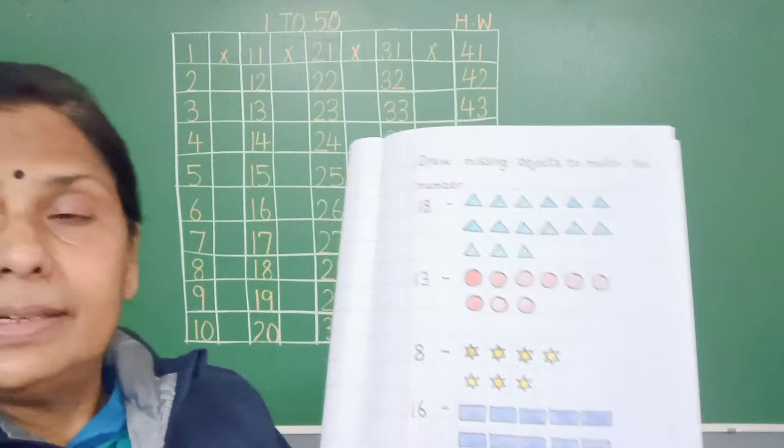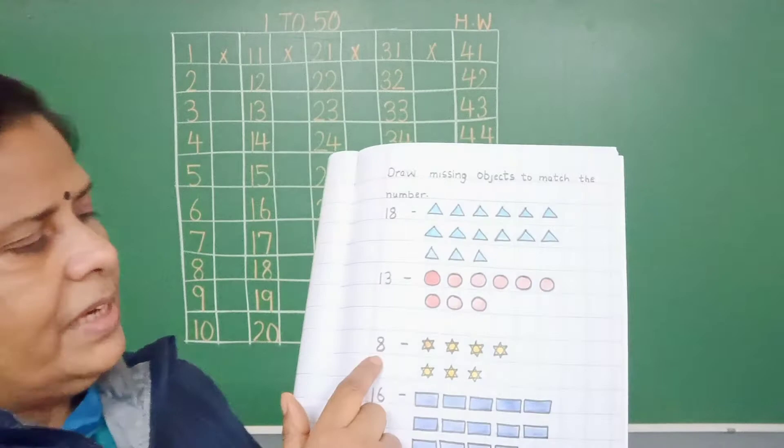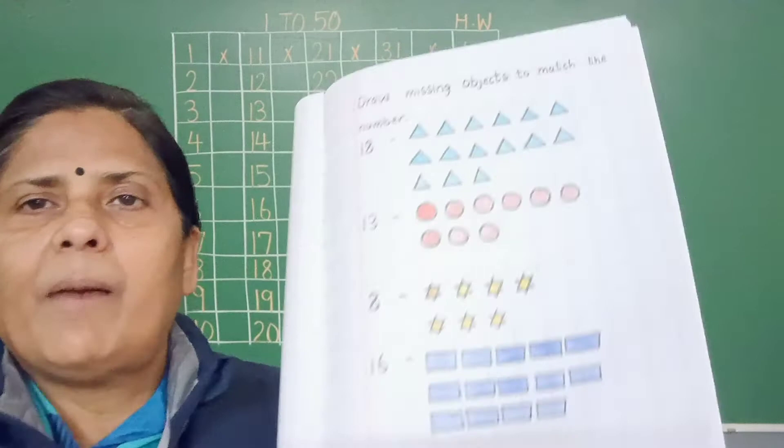Like 18, triangles. 13, circles. 8, stars. 16, rectangles. Now what do you do?